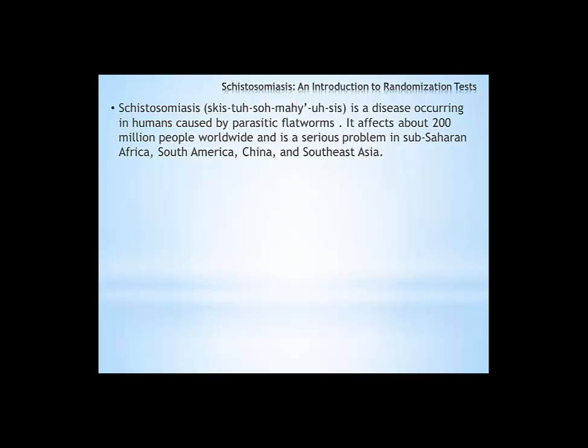Schistosomiasis is a disease that occurs in humans and is caused by parasitic flatworms. When people are exposed to unclean water these worms enter the skin and lay eggs. It affects about 200 million people worldwide and is a serious problem in sub-saharan Africa, South America, China, and Southeast Asia.